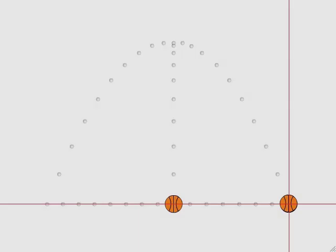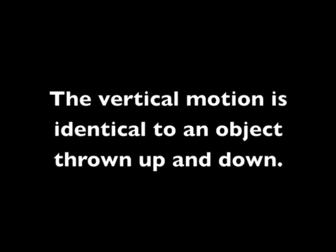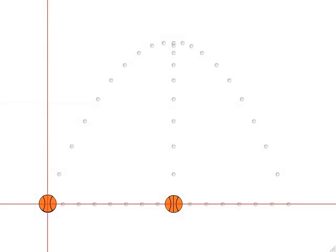The vertical motion is identical to an object thrown up and down, and is completely independent of the sideways motion.